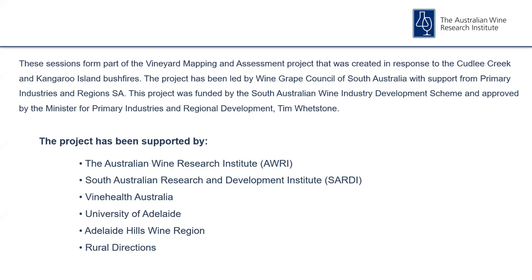These sessions were formed as part of the vineyard mapping and assessment project that was created in response to the Cuddly Creek and Kangaroo Island bushfires. The project has been led by Wine Grape Council of South Australia with support from Primary Industries and Regions SA, and was funded by the South Australian Wine Industry Development Scheme and approved by the Minister for Primary Industries and Regional Development, Tim Whetstone. The project has been supported by stakeholders including the AWRI, SARDI, Vine Health Australia, University of Adelaide, Adelaide Hills Wine Region and Rural Directions.